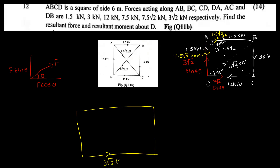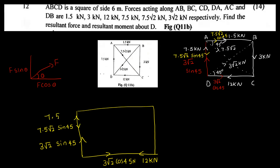For force 3√2 cos 45, the left side component is 12 kN. For 3√2 sin 45, the component is resolved vertically. 7.5√2 sin 45 equals 7.5 kN on the right side. Additional components: 1.5 kN and 3 kN on the right side.